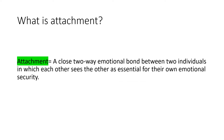So we'll start off by looking at what attachment is. Attachment involves two individuals who both see each other as essential for their own emotional security — it's quite a close two-way emotional bond. It could be an infant and their mother, an infant and their father, or an infant and grandparents, something that resembles that kind of idea.